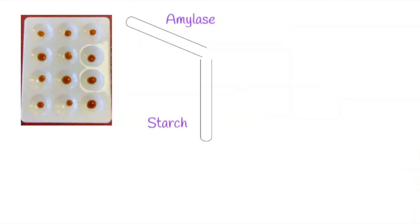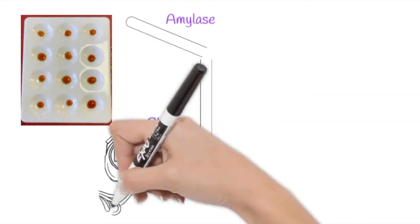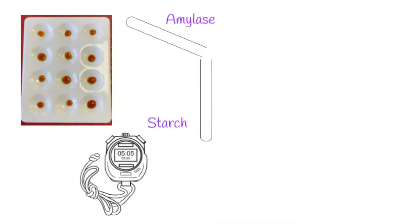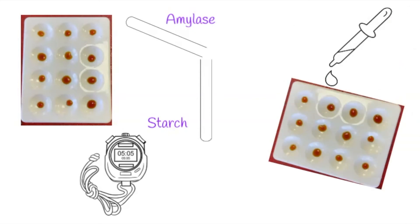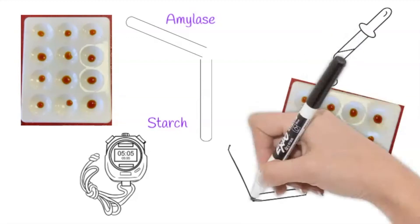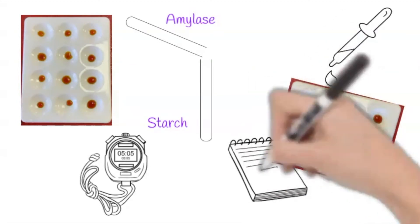Once the temperature has equilibrated — reached the surrounding temperature of the water bath — the amylase will be poured into the starch, mixed, and the stop clock will be started. After one minute, a sample of solution will be removed with a pipette and tested for starch. If the iodine goes blue-black, starch is present, so the solution will be tested again after another minute, and so on, until the iodine no longer changes colour, indicating all starch has been broken down by the amylase. The final number of minutes is recorded.